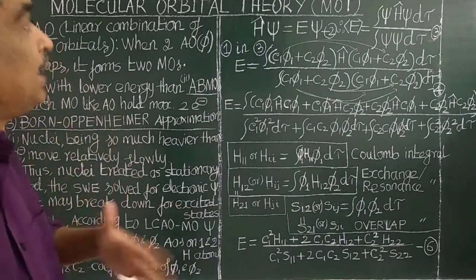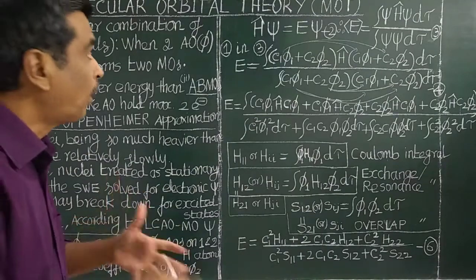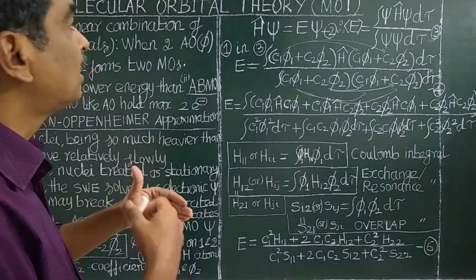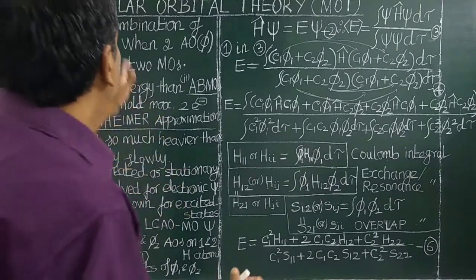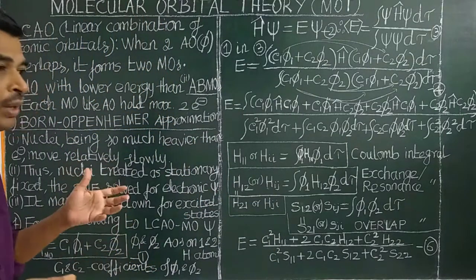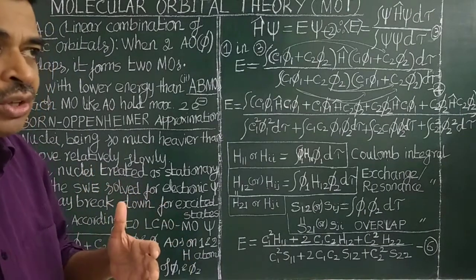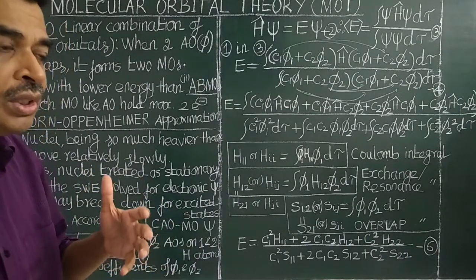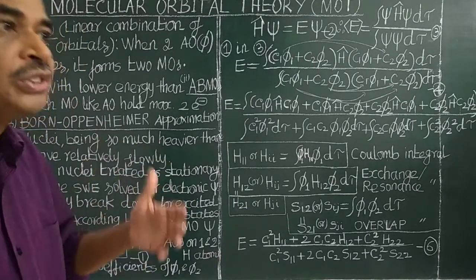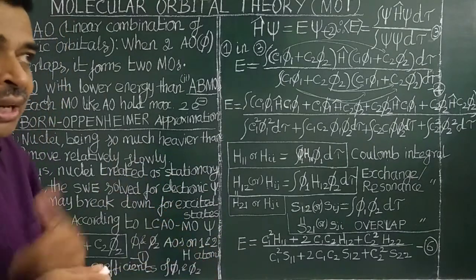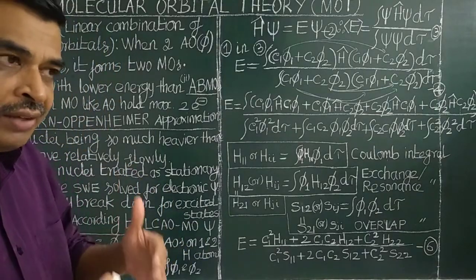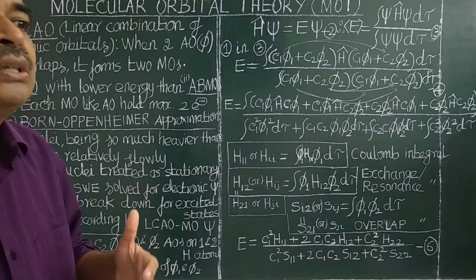This is the quantum mechanical treatment of molecular orbital theory. You have studied molecular orbital theory even in plus 2. Here we see how quantum mechanics is applied for obtaining molecular orbitals and molecular orbital energy levels. On solving the Schrödinger wave equation of atoms, the wave functions obtained are called atomic orbitals. Similarly, on solving the Schrödinger wave equation for molecules, the wave functions obtained are called molecular orbitals.